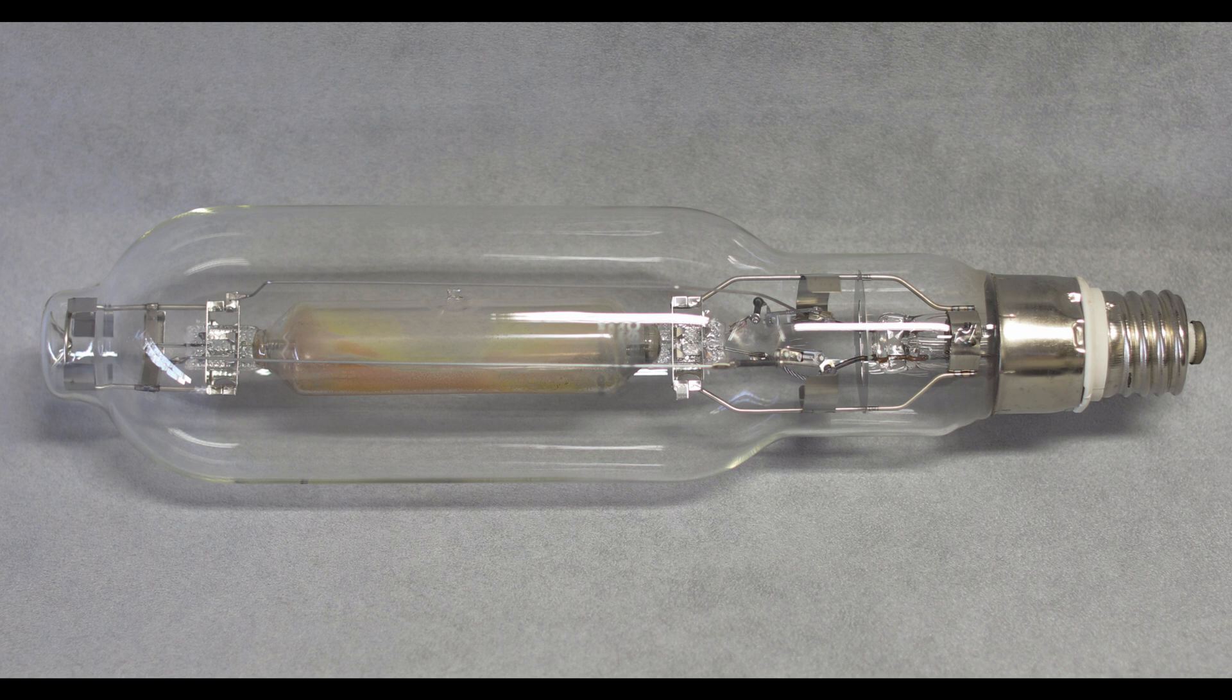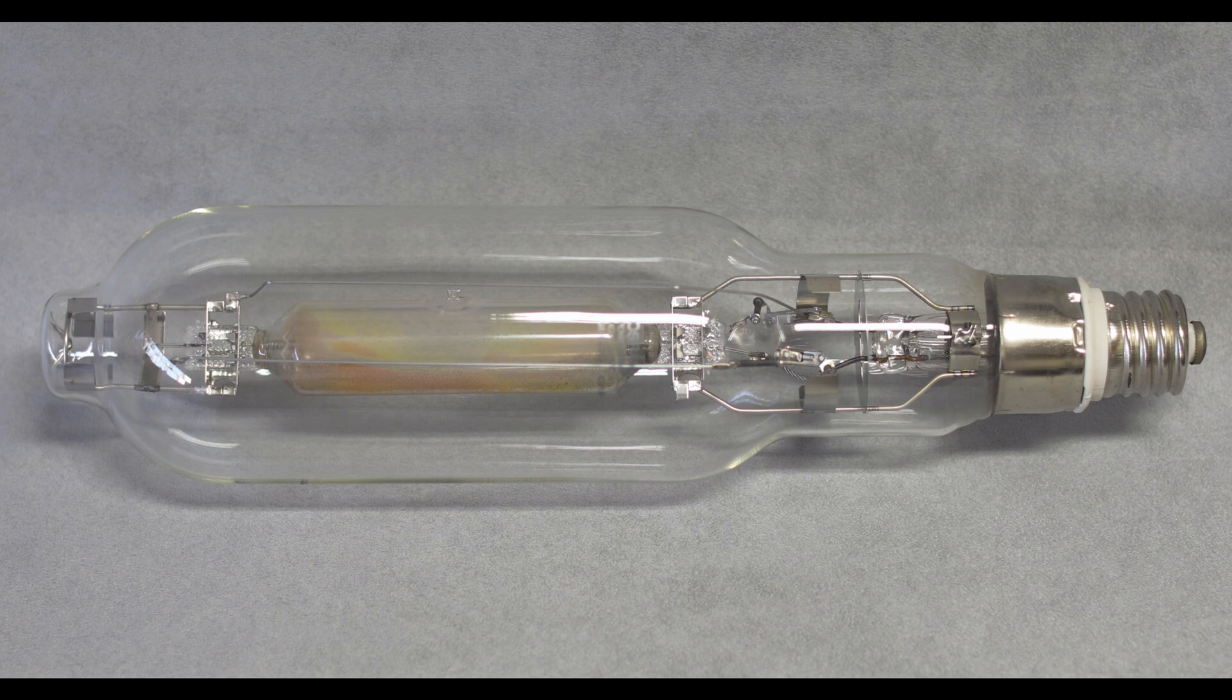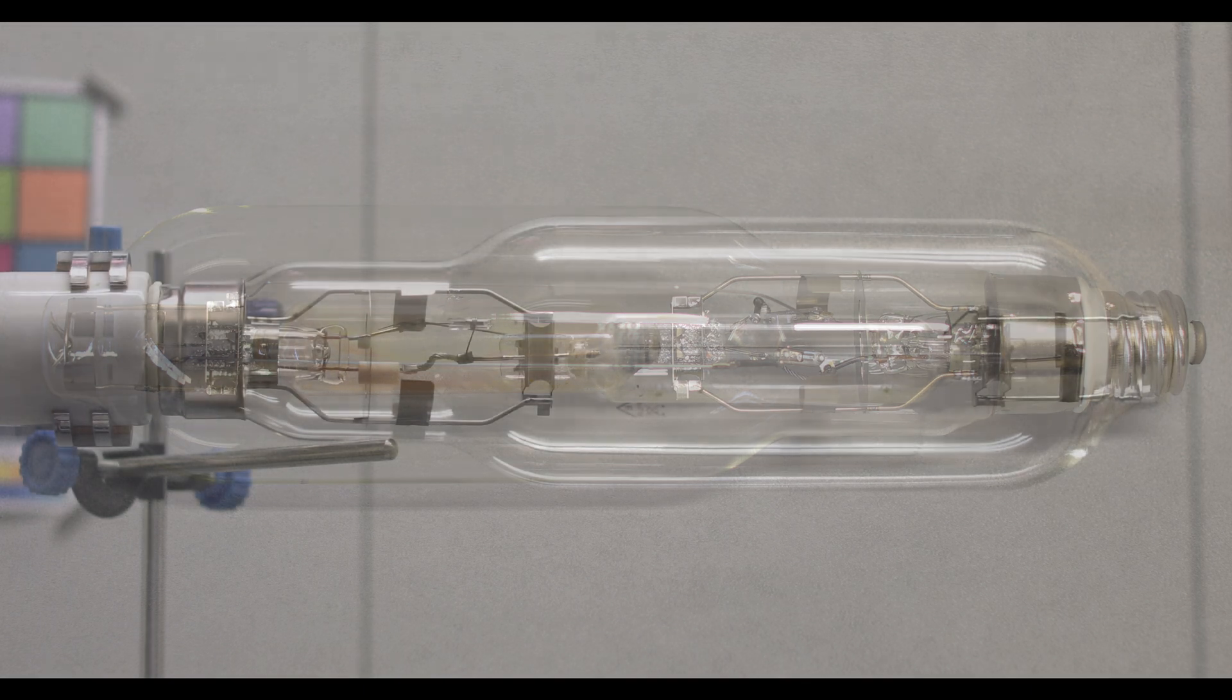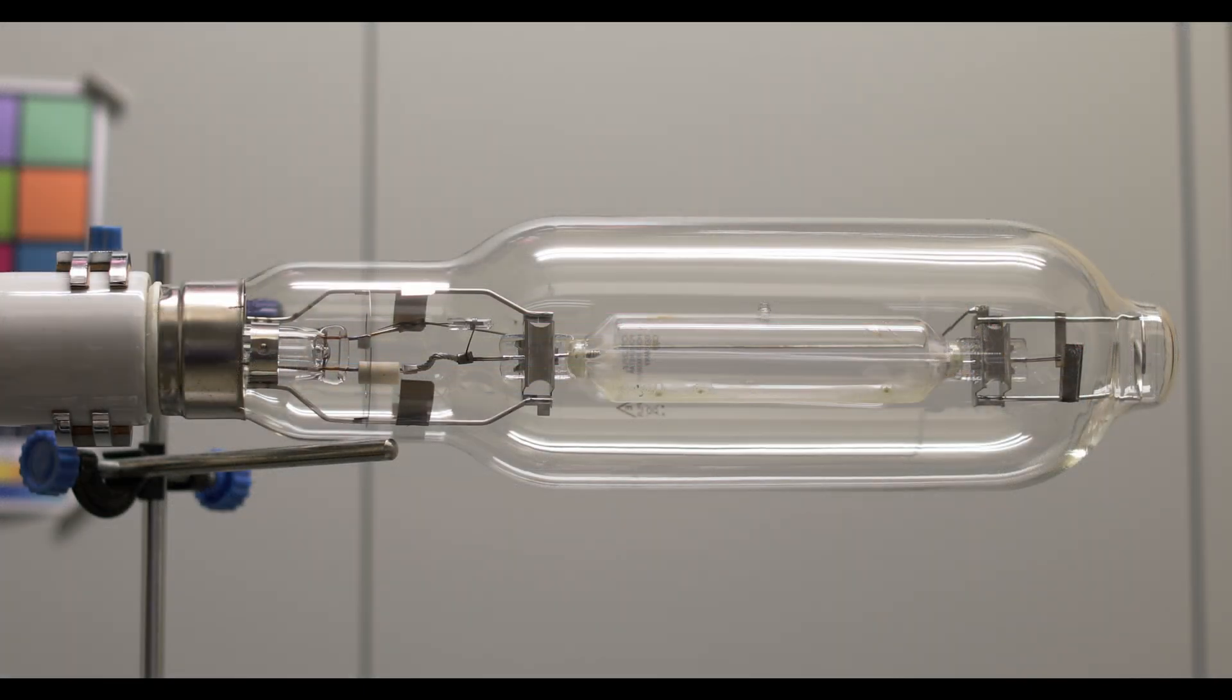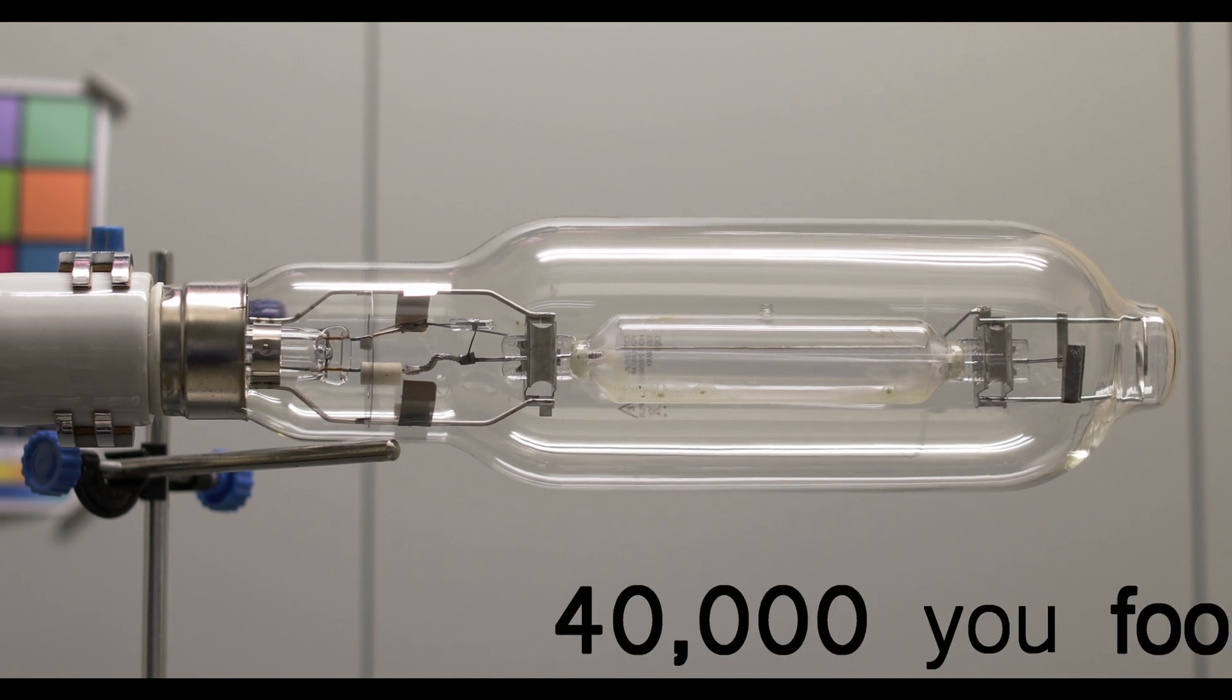But anyway, they do a super version of this lamp which I've been trying to track down and I've managed to get one. So let's have a look at that one now. And there she is, Osram Powerstar HQIT super. This lamp kicks out an incredible 245,000 lumens. That's 40,000 lumens more than the standard lamp.